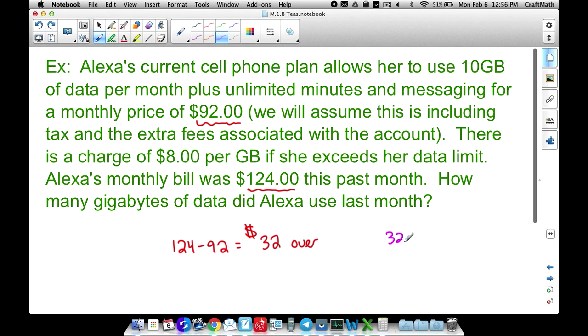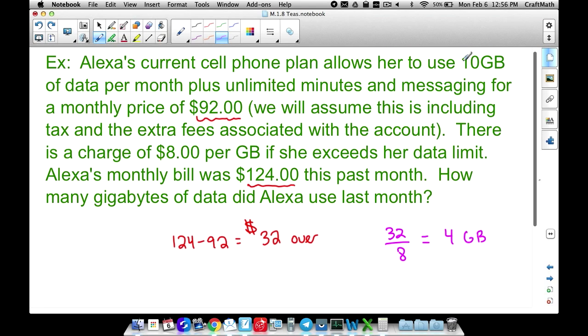Well, $32, if we divide it by eight, because for every gig that she goes over, she's going to pay eight bucks. Well, if we take 32 divided by eight, that means she went over by four gigabytes. Is this the answer to our question? The answer is no, because the question did not ask, how much did she go over? The question says, how many gigabytes of data did Alexa use last month? She didn't use four gigs. Remember, she gets 10 gigs as part of her plan. She went over by four gigs. So therefore, her total amount will be she used 14 gigabytes of data last month.